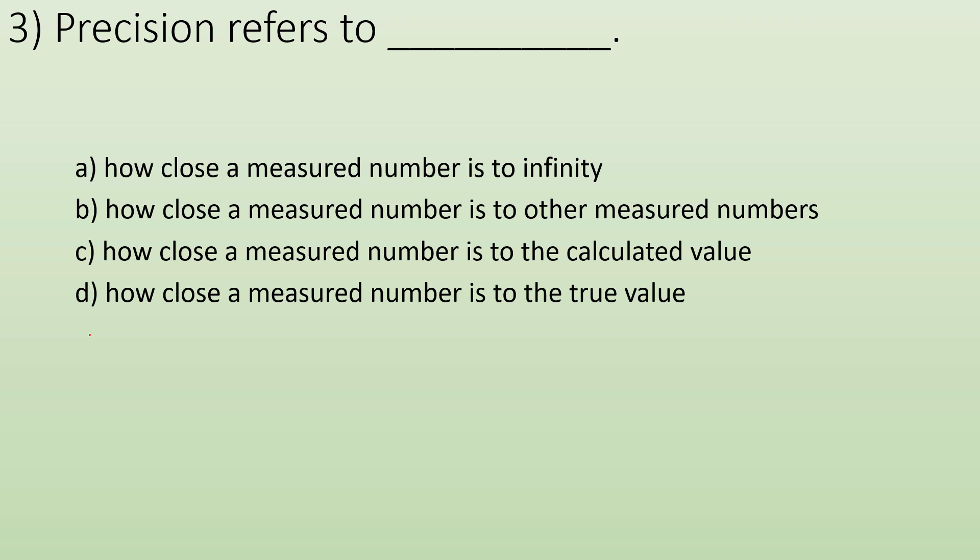Precision. What's meant by precision? Precision is how close a measured number is to other measured numbers. It's not how close is a measured number to infinity. That's just kind of a nonsense answer. How close a measured number is to the calculated value? No. How close a measured number is to the true value? Well, this is describing accuracy, not precision. So right answer for a different question. How close a measured number is to zero? Again, another nonsense answer.